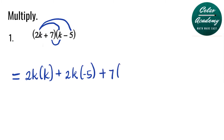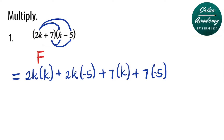So plus 7 times k. Plus, we will also distribute 7 with the negative 5 — so that is 7 times negative 5. Step one: multiply the first terms 2k and k. Step two: multiply the outside terms 2k and negative 5. Step three: multiply the inside terms 7 and k. Step four: multiply the last terms 7 and negative 5. 2k times k is 2k squared because we add the powers 1 and 1.